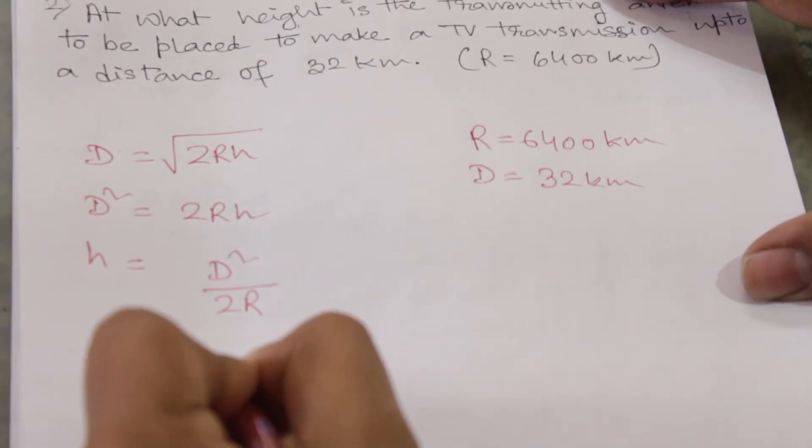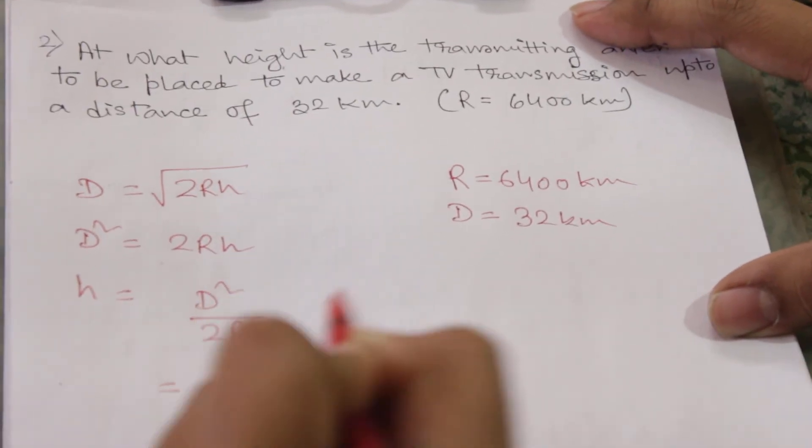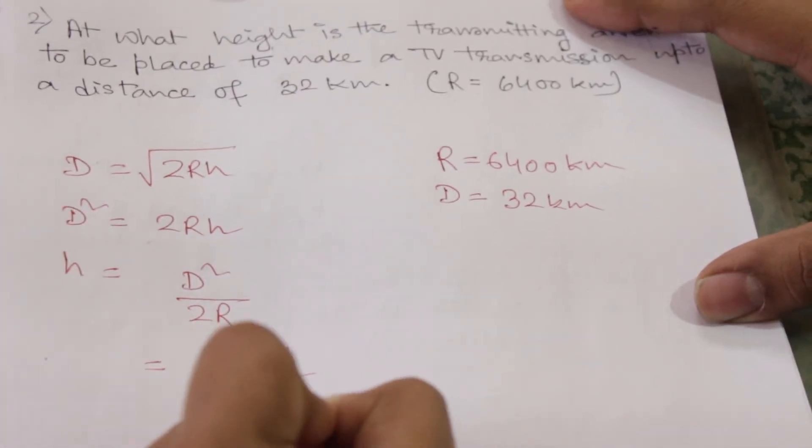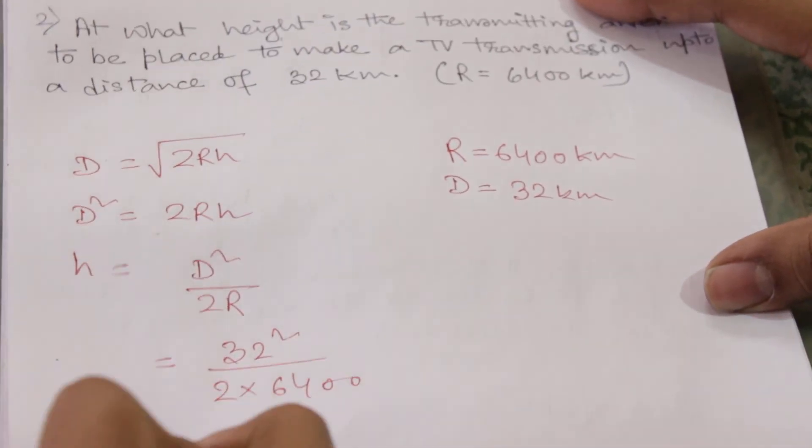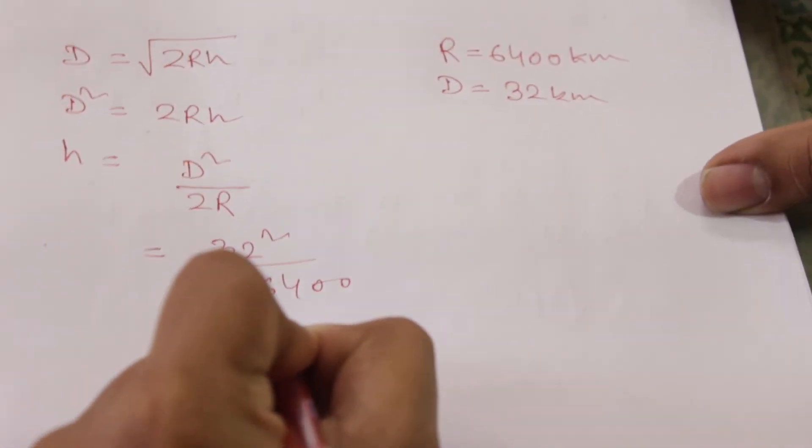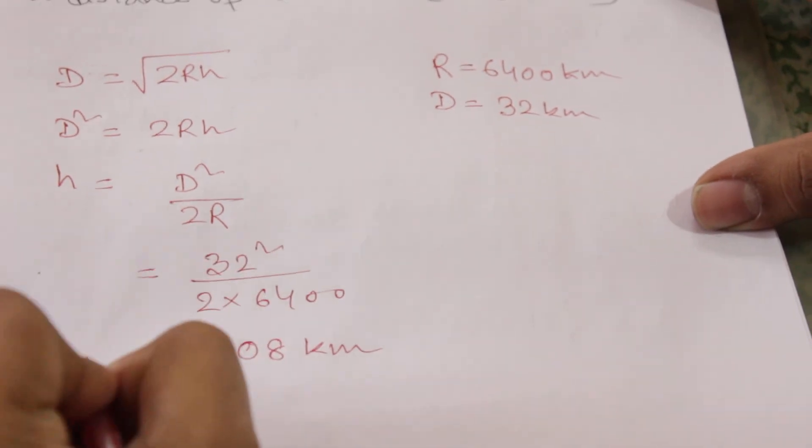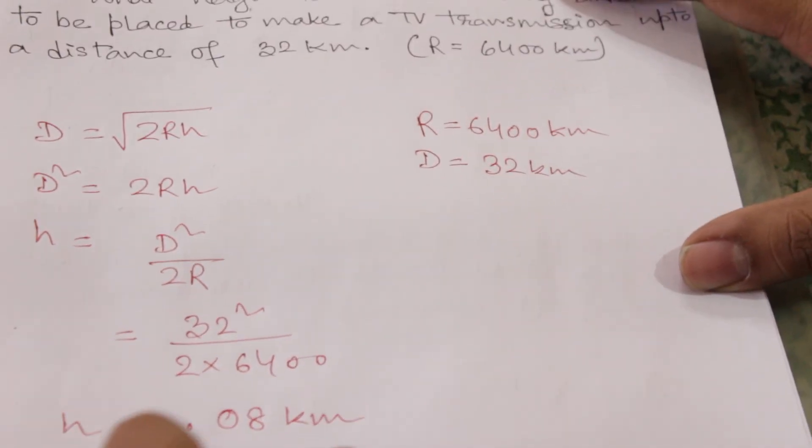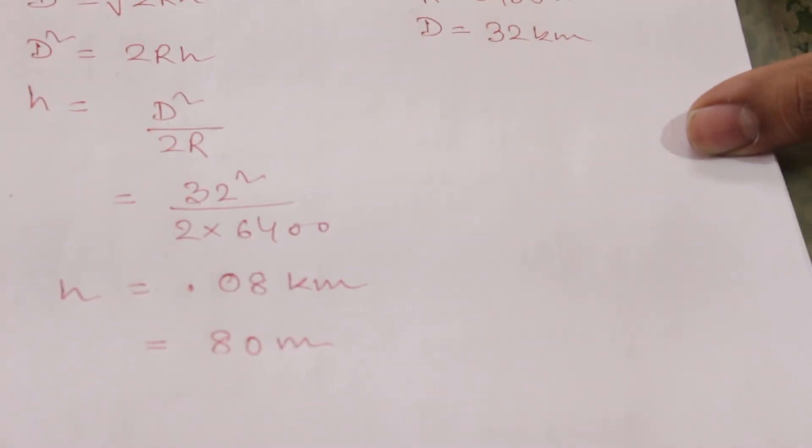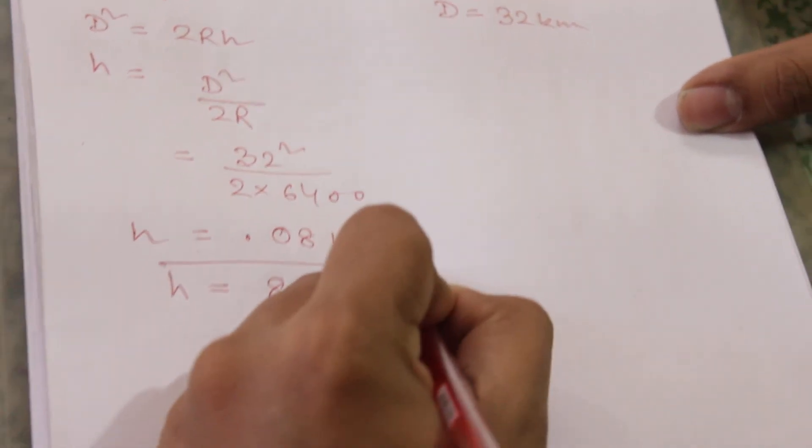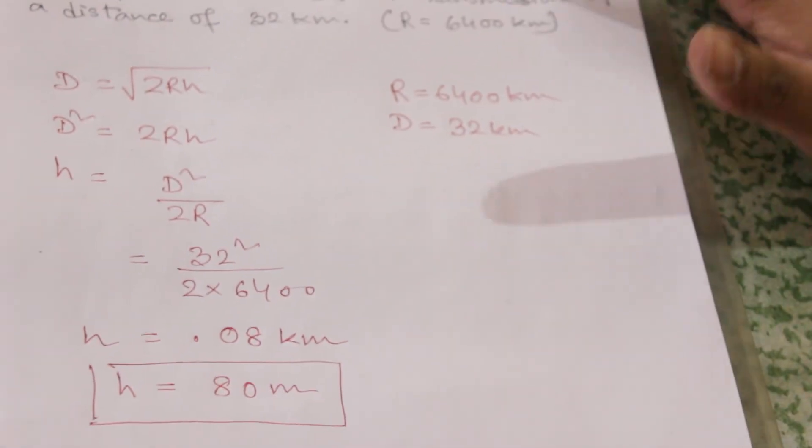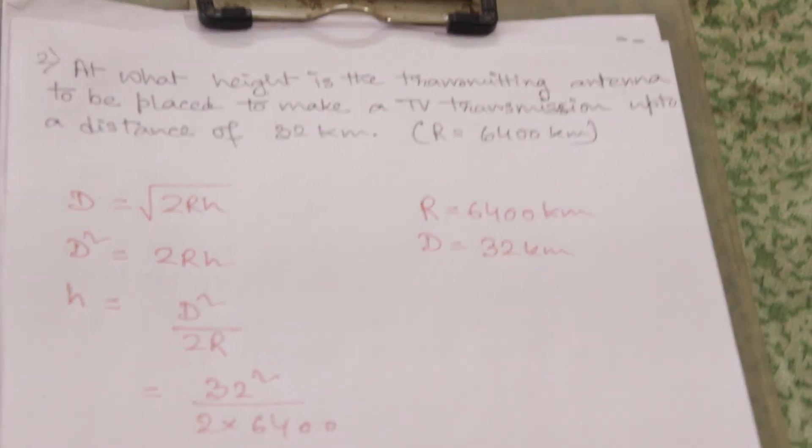D squared means 32 squared and R is 6400. If we calculate this value, we will get h as 0.08 kilometers, which will be equal to 80 meters. So this is the height of the transmitting antenna. This is how we can easily solve antenna height related problems.